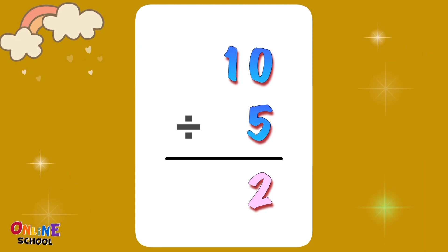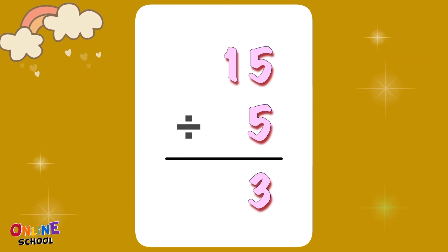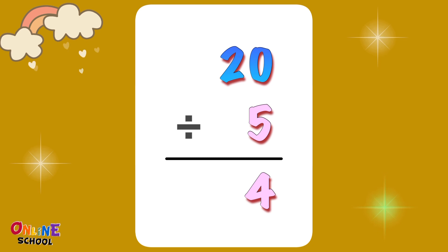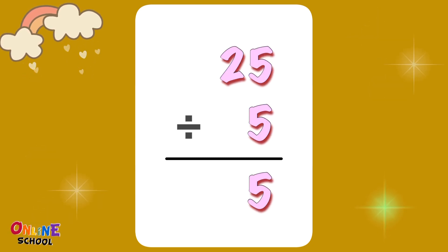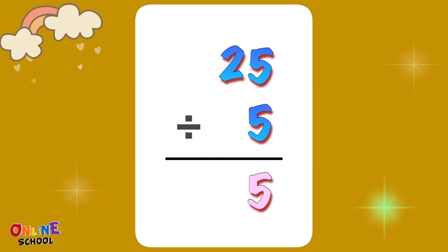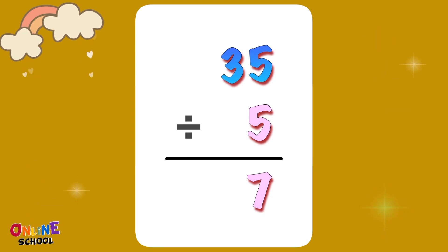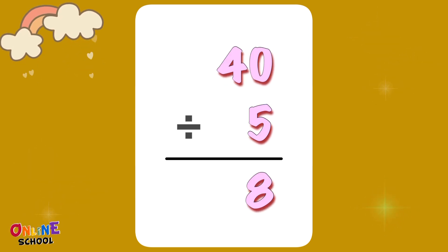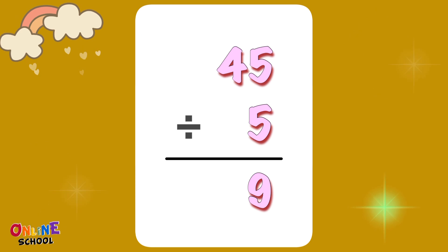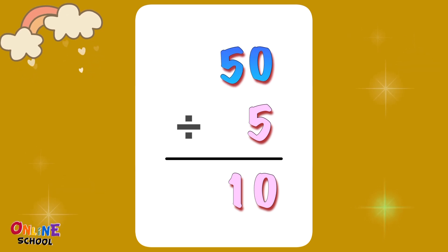Divided by 5. 5 divided by 5 equals 1. 10 divided by 5 equals 2. 15 divided by 5 equals 3. 20 divided by 5 equals 4. 25 divided by 5 equals 5. 30 divided by 5 equals 6. 35 divided by 5 equals 7. 40 divided by 5 equals 8. 45 divided by 5 equals 9. 50 divided by 5 equals 10.